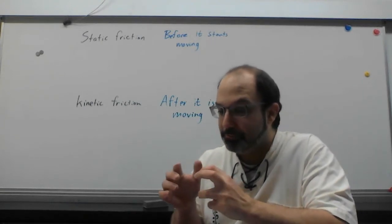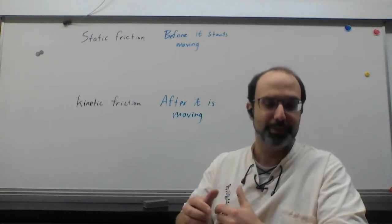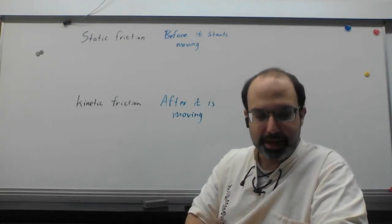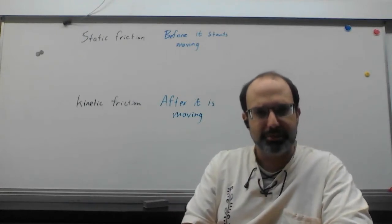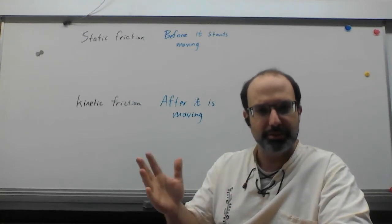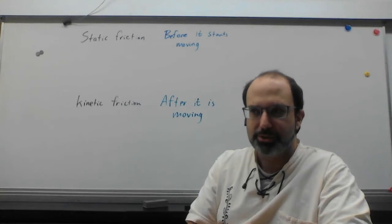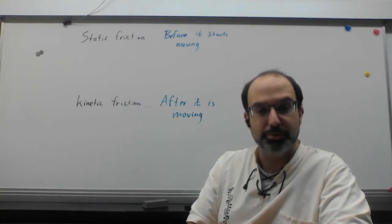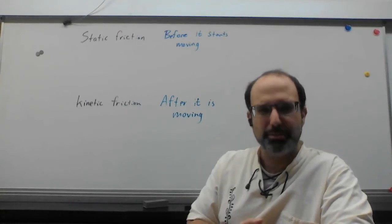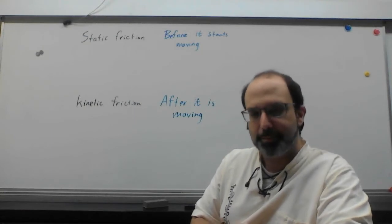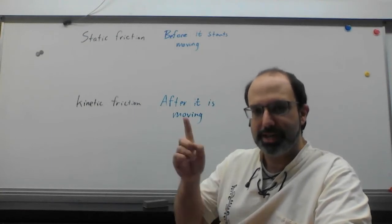This limit is when static friction disappears. And when static friction disappears like that, we call it the situation where something begins to move. That's an important one. Now, when that happens, we go from static to kinetic.